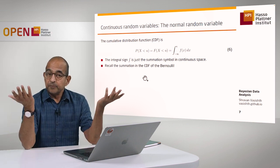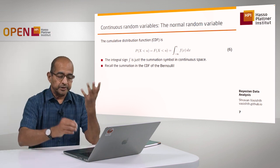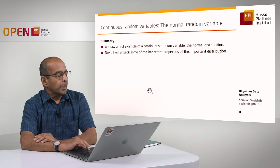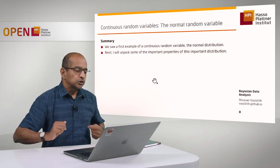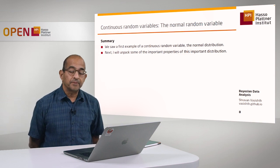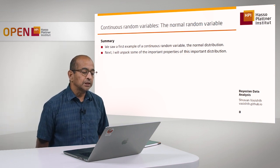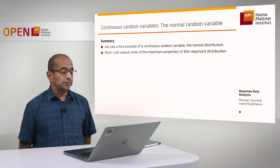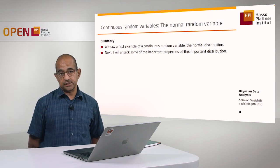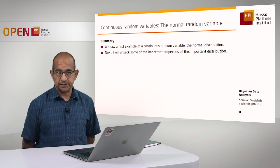Nothing much has changed except that we've moved to a continuous space. What we've seen today is a first example of a continuous random variable — the normal distribution. In the next lecture, I'm going to unpack some important properties of this distribution.